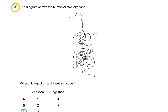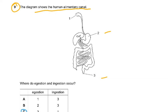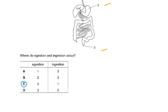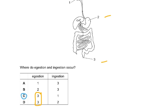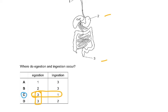Question 9: The diagram shows the human alimentary canal. One is the mouth, two is the stomach, and three is the anal canal. Where do ingestion and egestion occur? Egestion would be three, the removal of the feces, the undigested parts of the food that we ate. And ingestion can't be stomach, it has to be the mouth or the buccal cavity. So the answer was C.